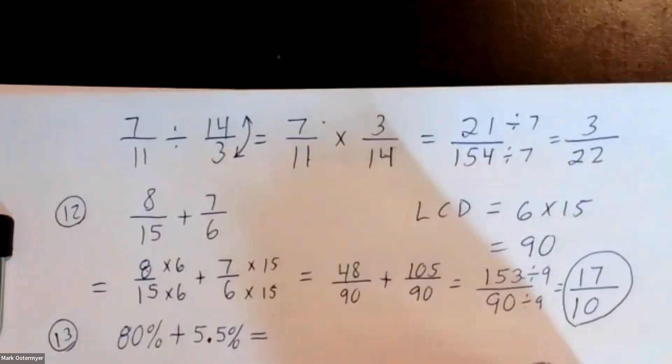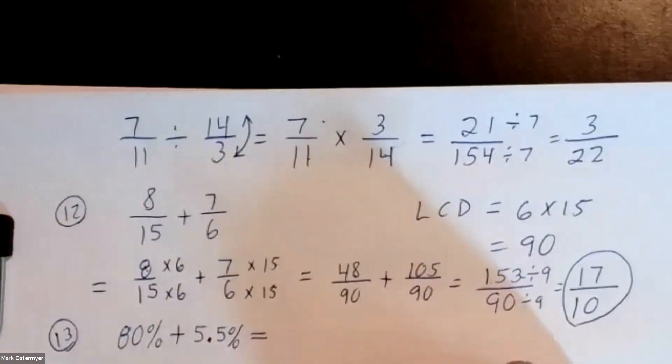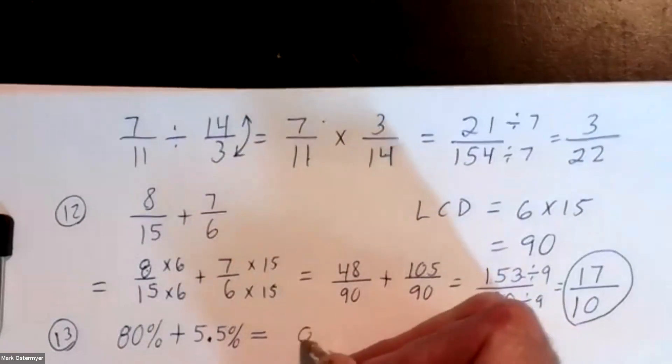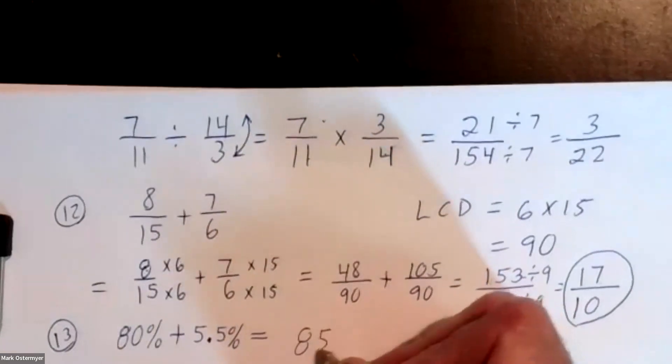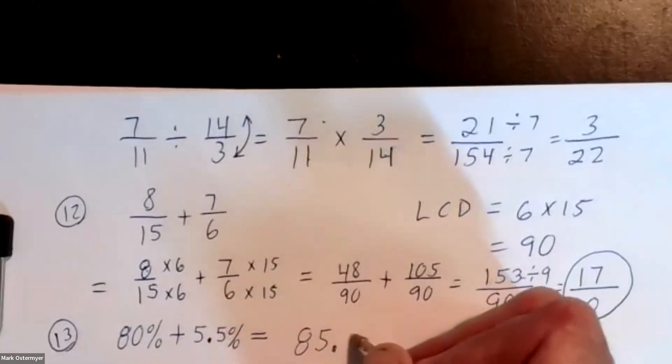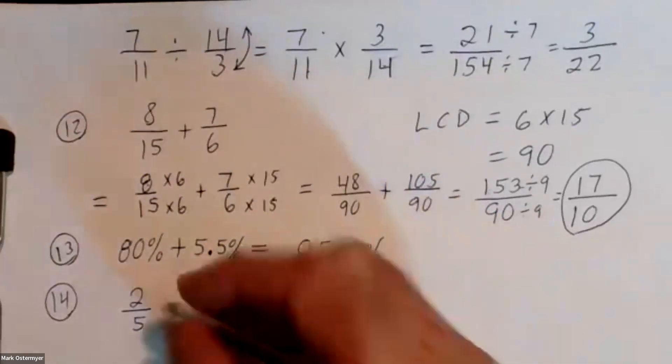How do you add these percents together? This would be eighty-five point five percent — correct. Yes, that's all there is to it. And that is the answer for number thirteen.